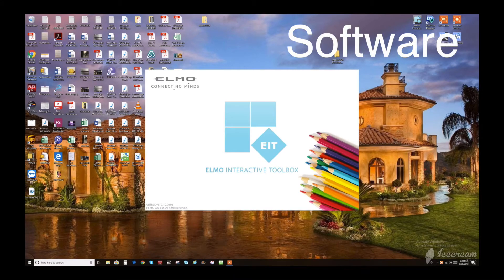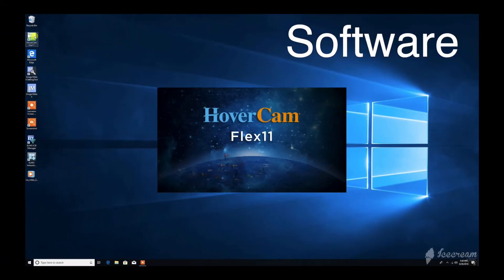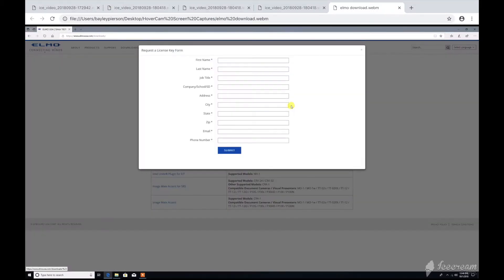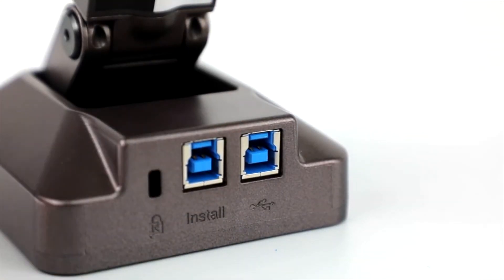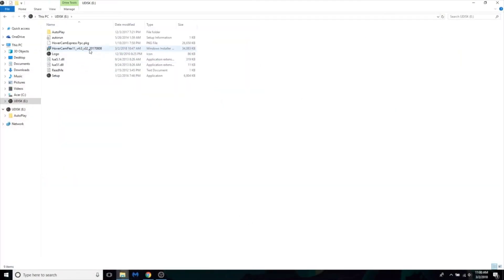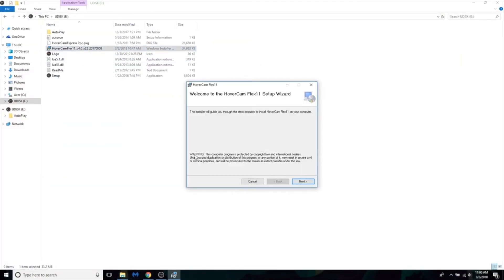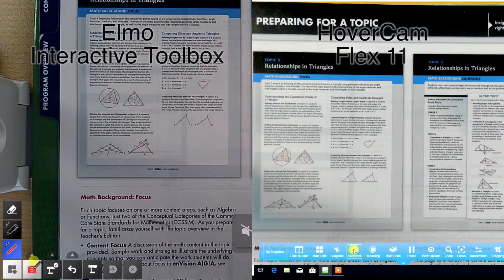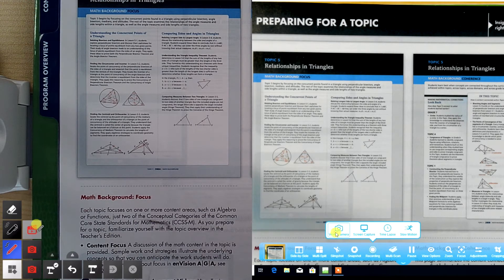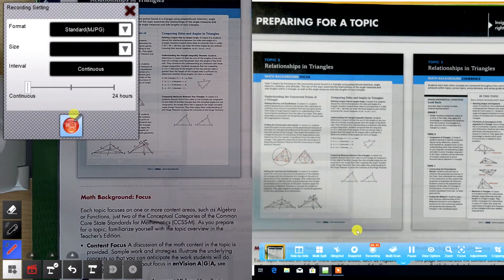It's also worth taking a look into software, which is very important when presenting or recording lessons. Elmo's software is downloadable from their website and accessible once you request a license key from them. Hovercam's Flex 11 software can be installed directly from the camera itself, with no license key or downloading required. They can both capture 13 megapixel still images and record lessons. But only the Solo 8 Plus has the built-in microphone to capture audio.